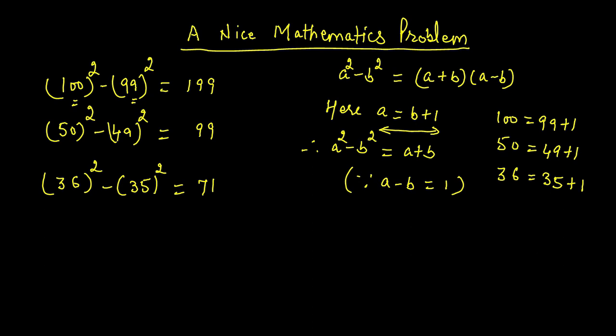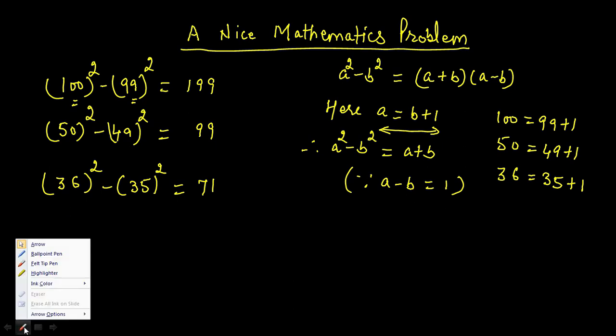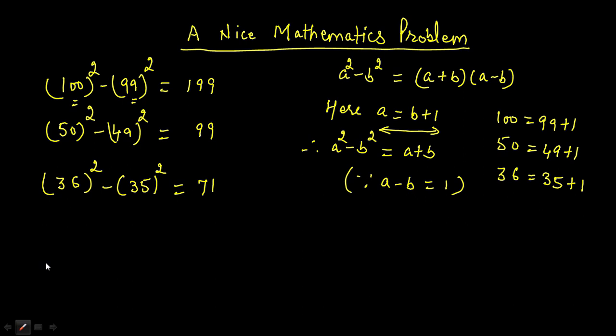Hello, my dear students. In this video I am going to explain a nice mathematics problem. Suppose in an exam someone asks you a problem like: 100 squared minus 99 squared, 50 squared minus 49 squared, 36 squared minus 35 squared, or any other problem where you are finding the difference of two squares. First of all, look at this formula: a squared minus b squared equals a plus b times a minus b.